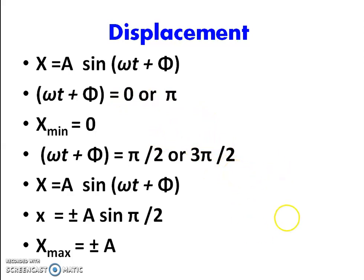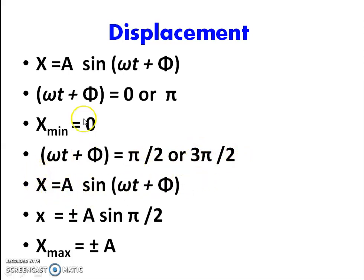When displacement is minimum, the angle is 0, so ωt + φ = 0. When ωt + φ = π/2 or 3π/2, x equals A sin(π/2), giving a plus or minus extreme value. That is called x maximum — the displacement of the particle is maximum, plus or minus A. These are called extreme conditions or extreme positions in the case of displacement of a particle performing simple harmonic motion.